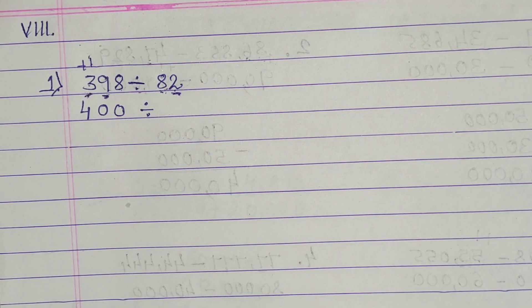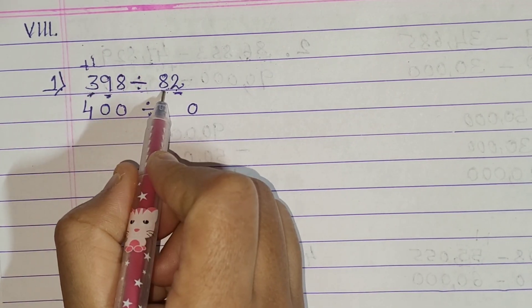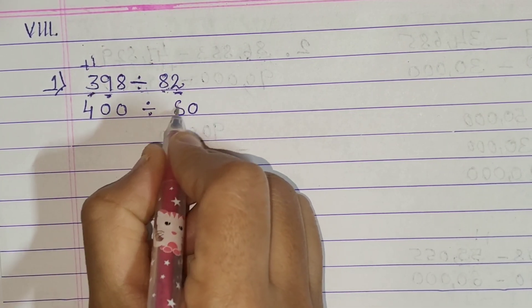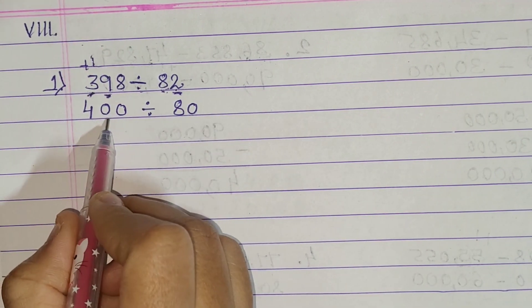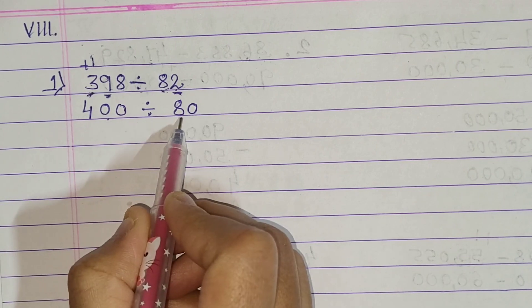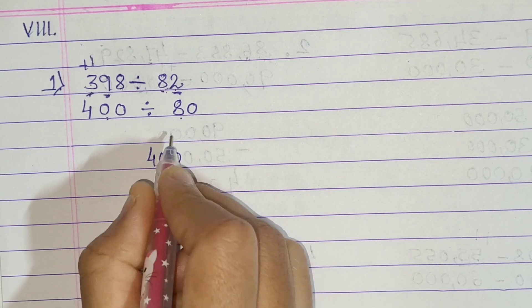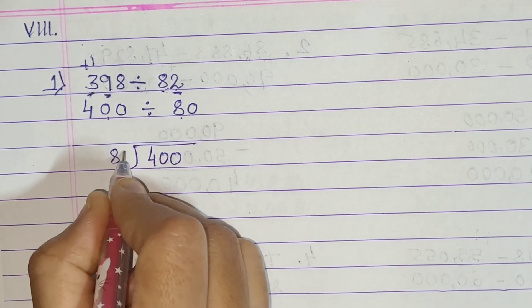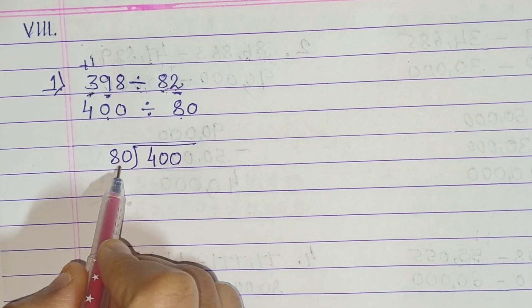For 82, we observe the units digit, which is 2. Since it is 1, 2, 3, or 4, we replace the units by zero and keep the tens digit unchanged. So 82 rounds to 80. So we now have 400 divided by 80, where 400 is the dividend and 80 is the divisor.